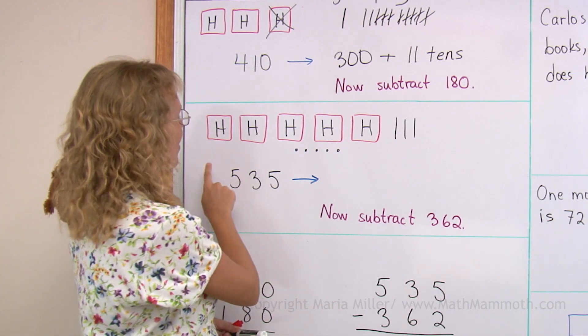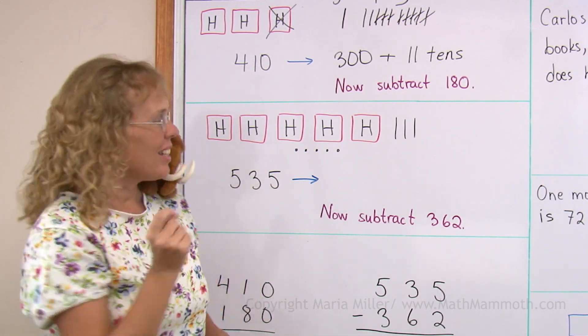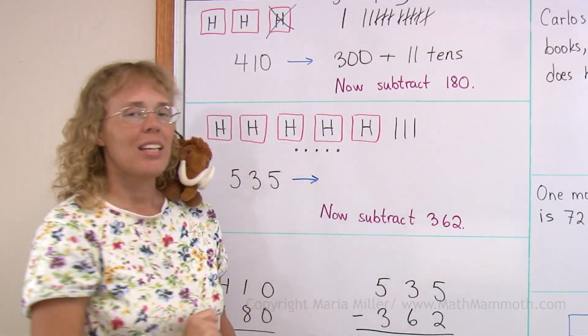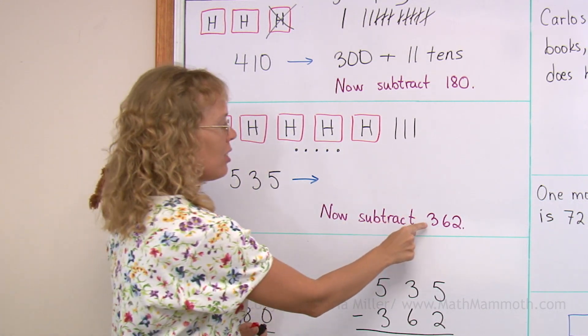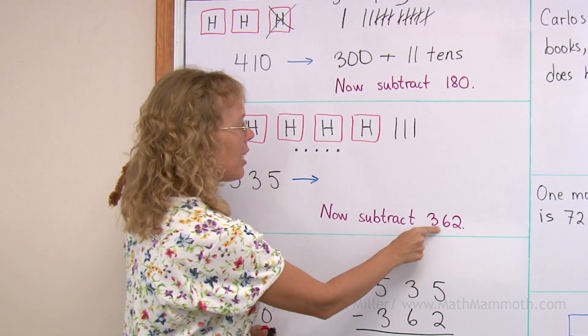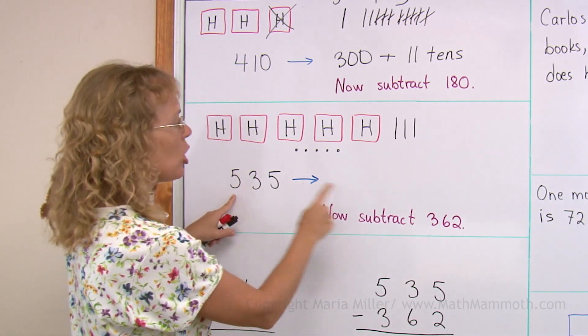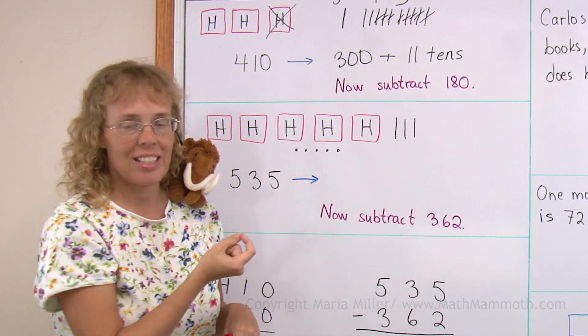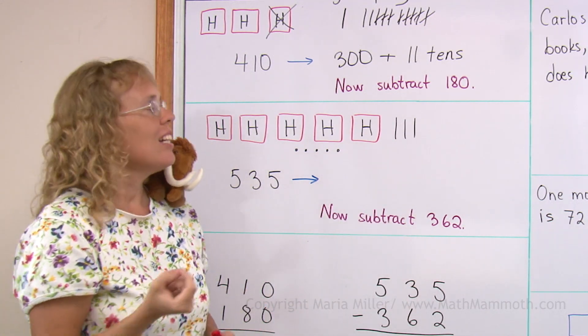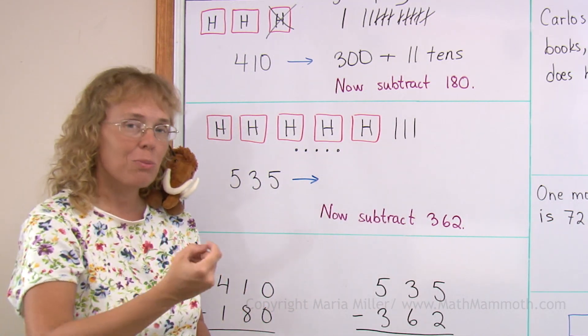Another example. I will first regroup, then subtract. And the regrouping is necessary because I cannot... Here. If I started to subtract three hundreds, yes I could. Six tens. That's what I cannot subtract. I don't have enough tens. That is why I need to first regroup, then subtract.